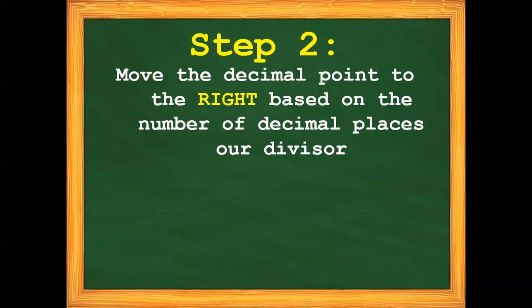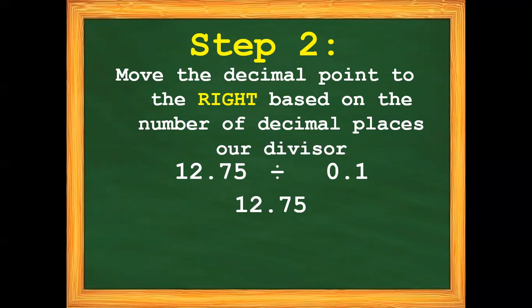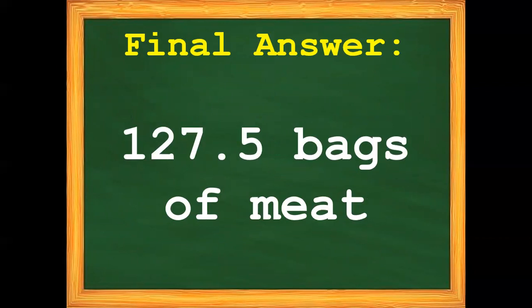We have one decimal place in one-tenth. Step number two: move the decimal point to the right based on the number of decimal places in our divisor. So for twelve-and-seventy-five-hundredths divided by one-tenth, we need to move the decimal point once to the right. The answer is one-hundred-twenty-seven-and-five-tenths. So our final answer is 127.5 bags of meat.